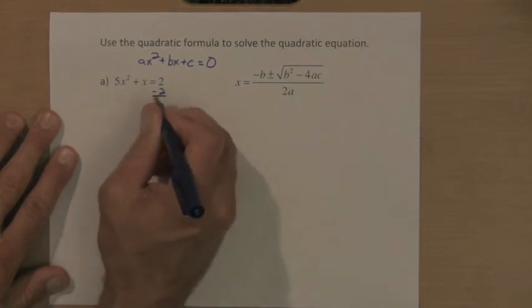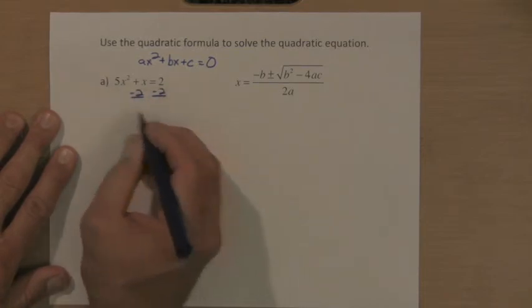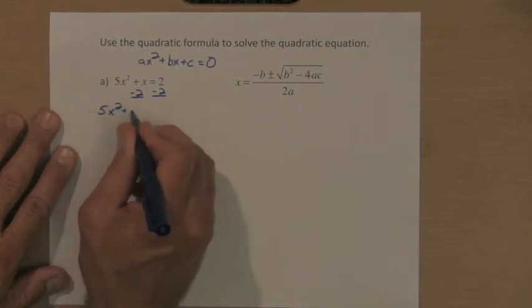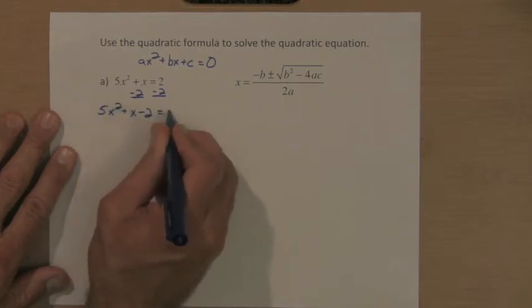So I'm going to do minus 2 to both sides of the equation to get equal to zero. So I'm really going to solve this version of that equation, 5x squared plus x minus 2 equals zero.